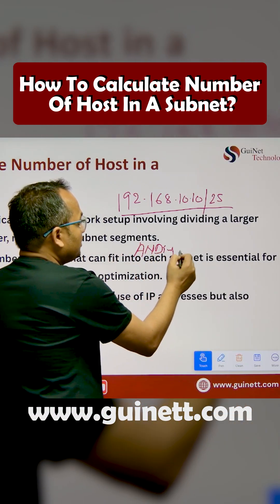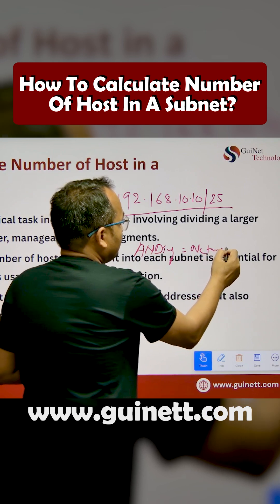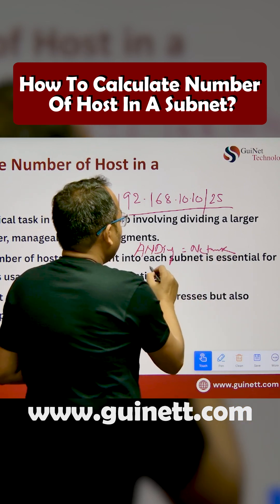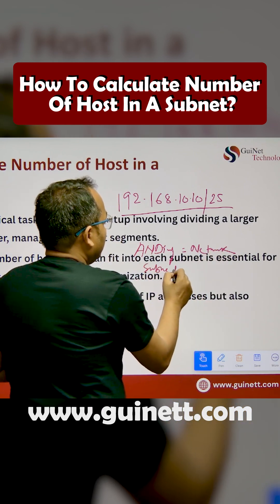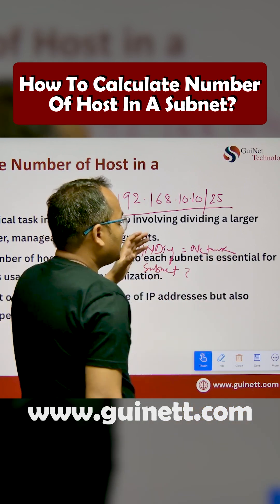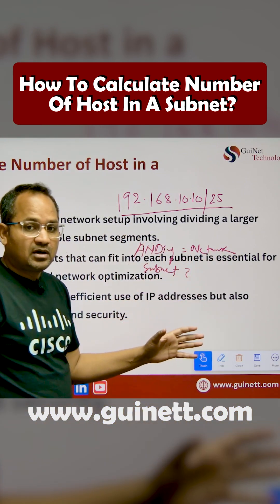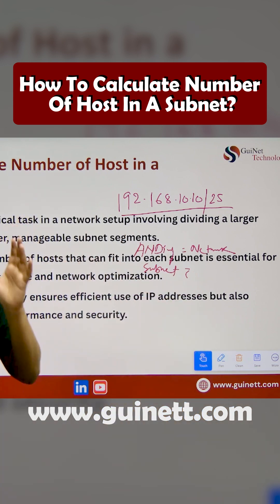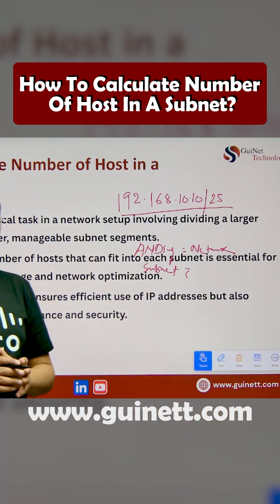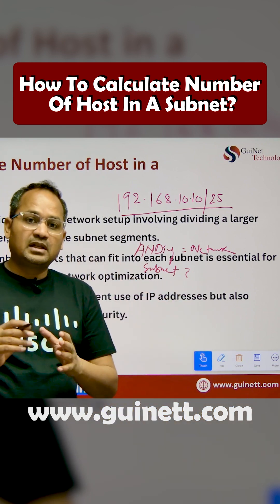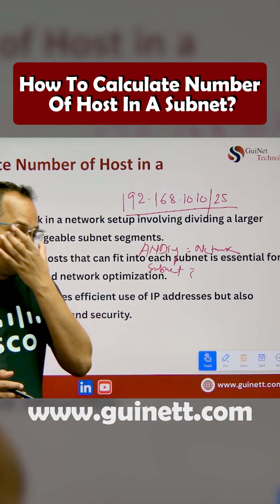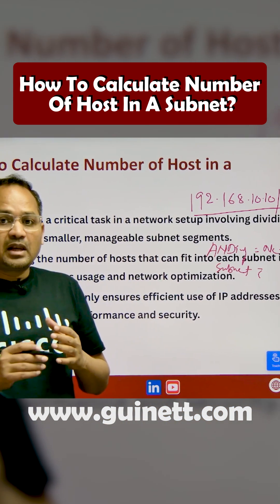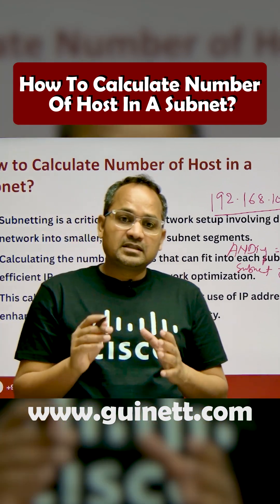The ANDing process is going to give us the network address — what is the network address and what is the subnet mask. Based on that, you figure out what the first IP is going to be and what the last IP is going to be.